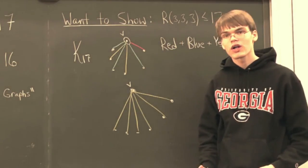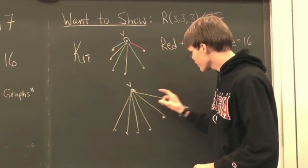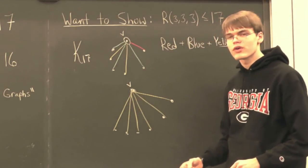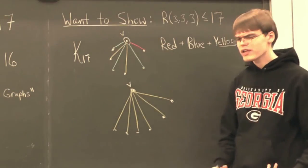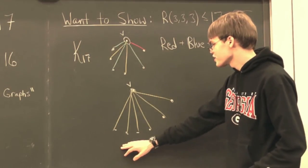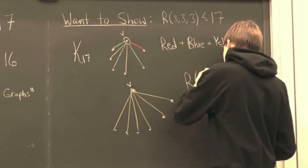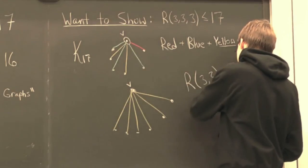So, we're essentially having a two-coloring on this complete subgraph on six vertices. Now, recall from the first video the fact that R(3,3) is equal to six.